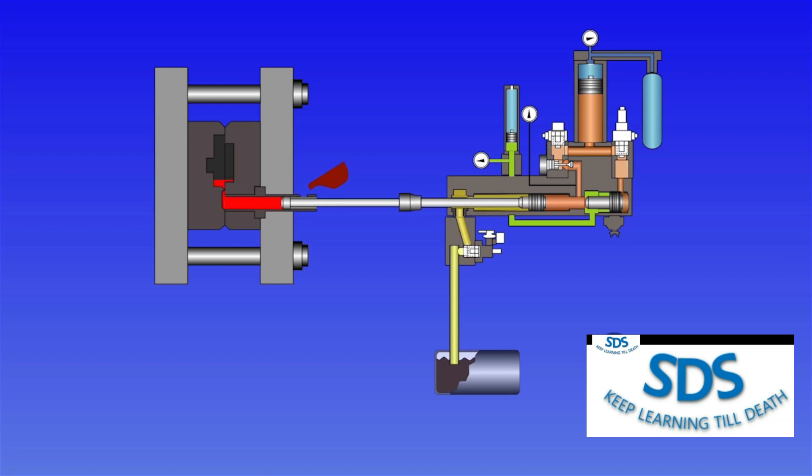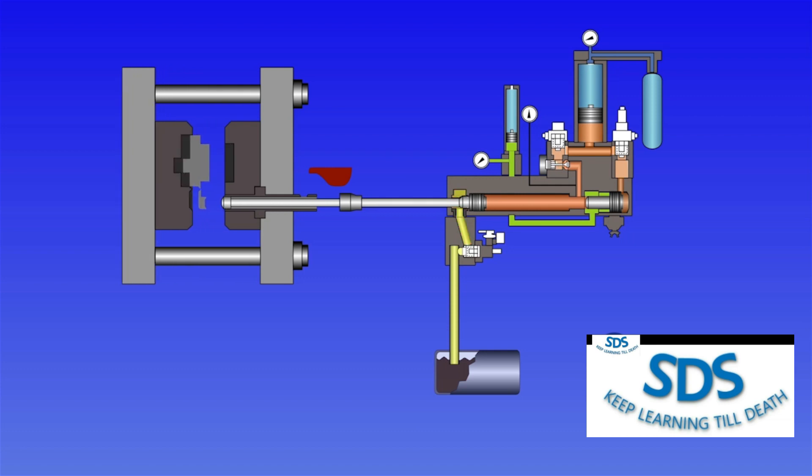The fact that the valve is controlling the flow out of the injection cylinder gives us the ability to accelerate and decelerate, thus giving production the freedom to design any curve profile they wish with up to 10 separate speeds, including braking at the end of stroke.